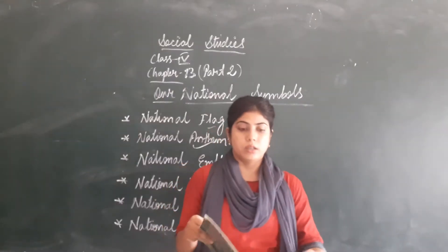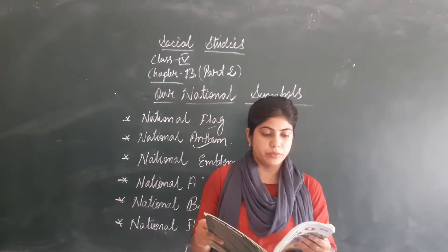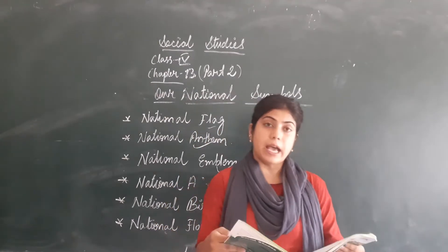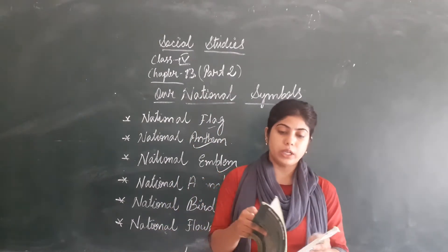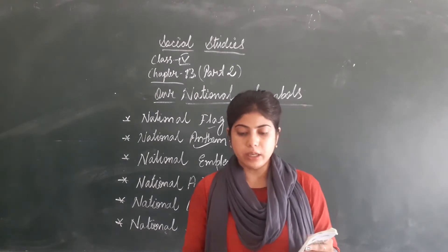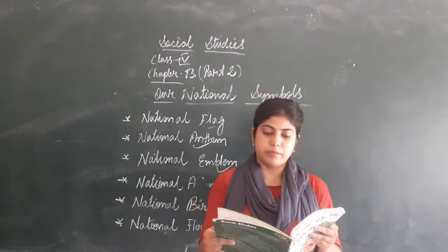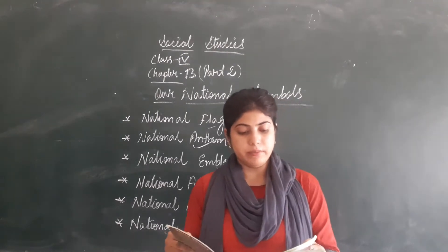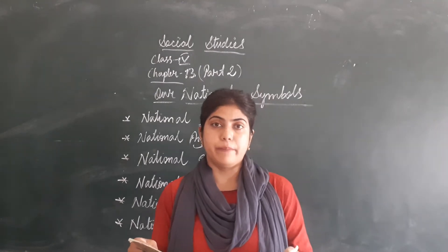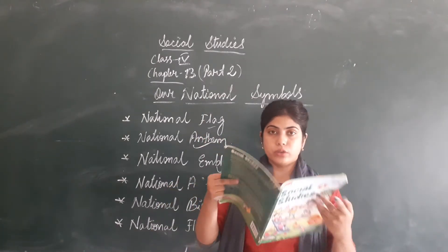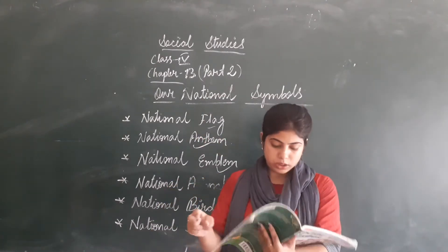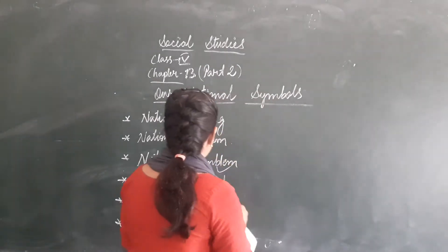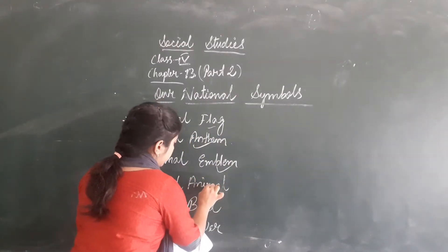So students, we have done with national flag in this chapter, chapter number 13, our national symbols - national flag, national anthem and national emblem. So now we are going to learn about national animal. Next is national animal.